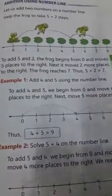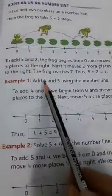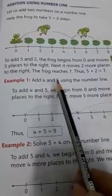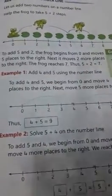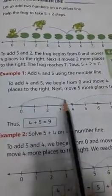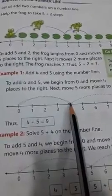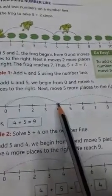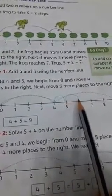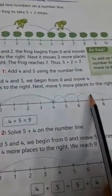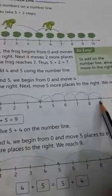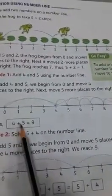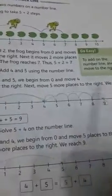Now, we have to solve 4 plus 5. From 0, you will go to 4 and then count 5: 1, 2, 3, 4, 5. Your answer is 9. 4 plus 5 equals 9.